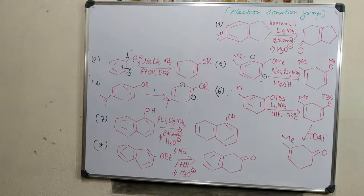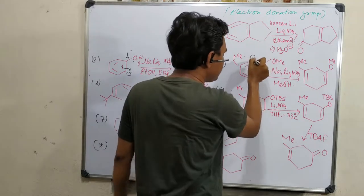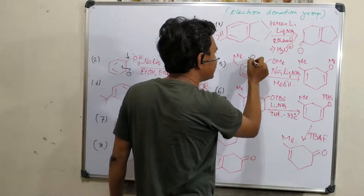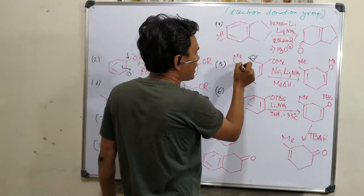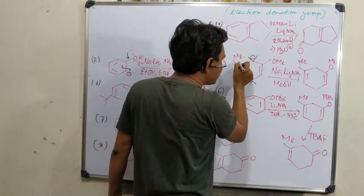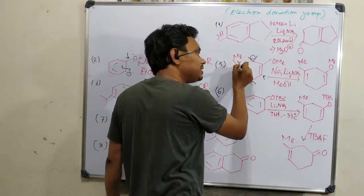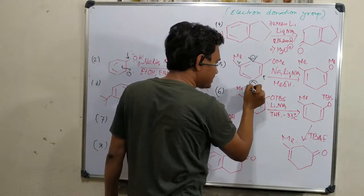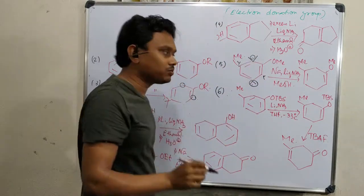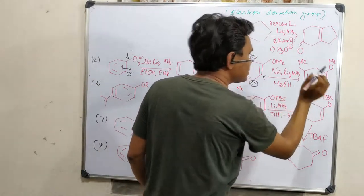If we consider the two possible protonation sites: if protonation occurs here, after carbanion formation the carbanion will not be stable there due to the methyl group. But if protonation occurs at the other position, that destabilization factor is not that much, and stabilization by the minus-I effect is possible. So reduction will occur at this position, and we get exclusively this product. Please keep this factor in mind because this is a very unique thing.